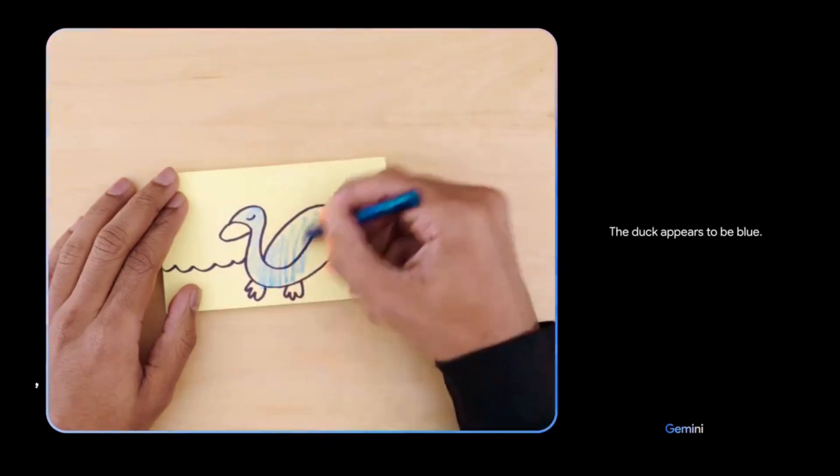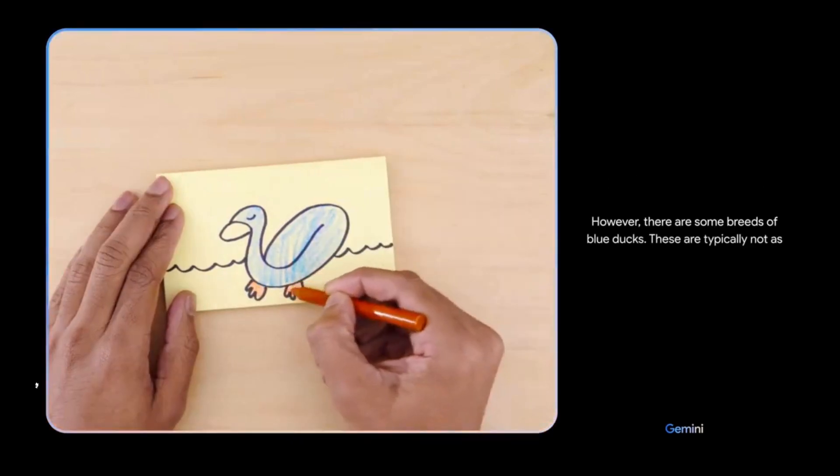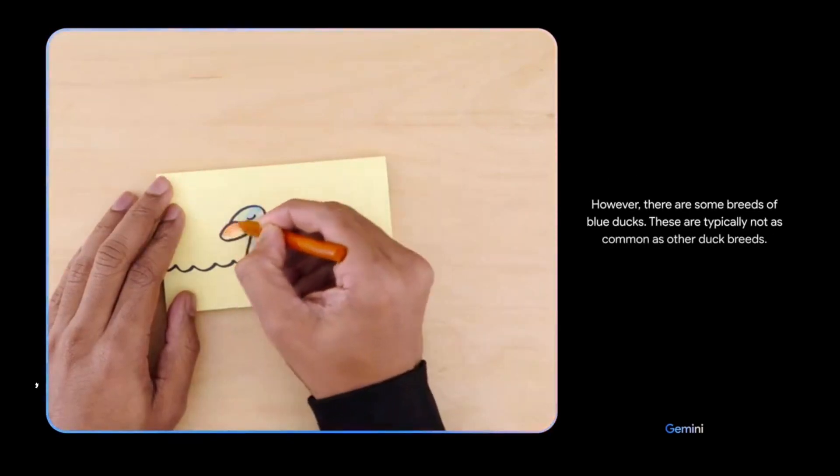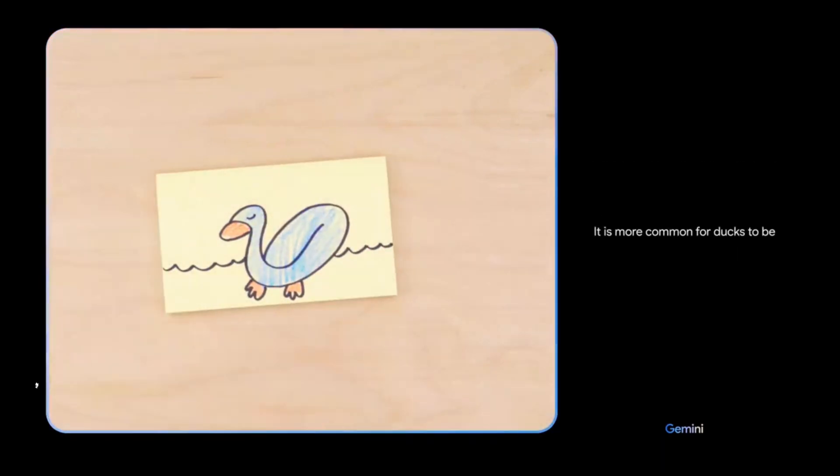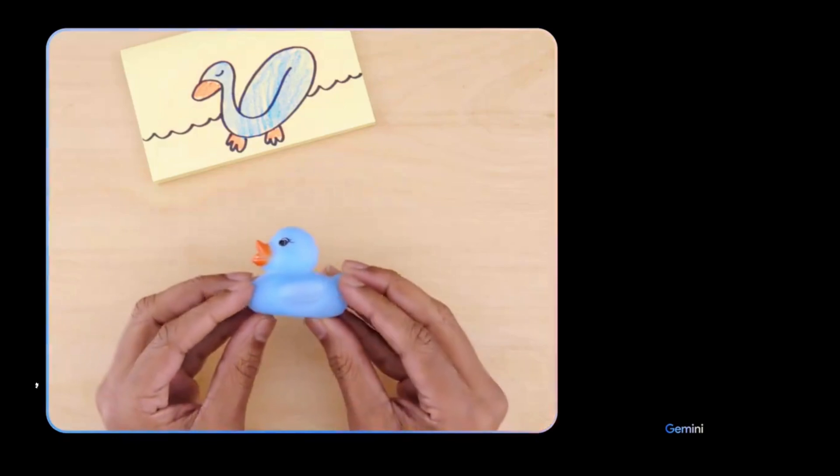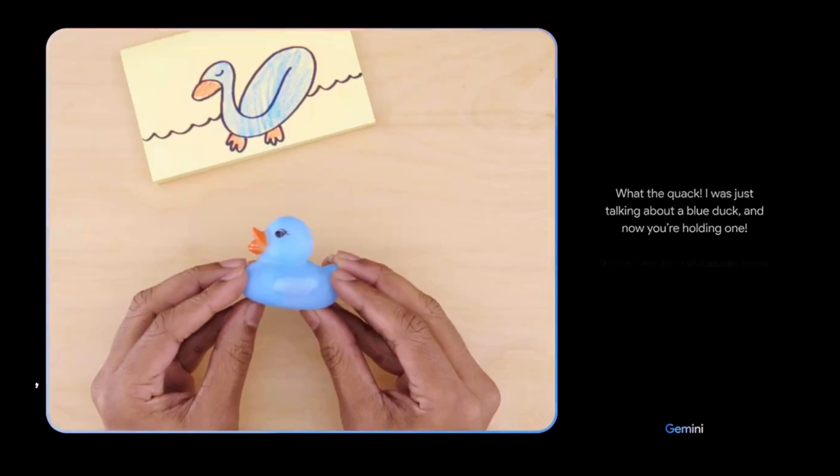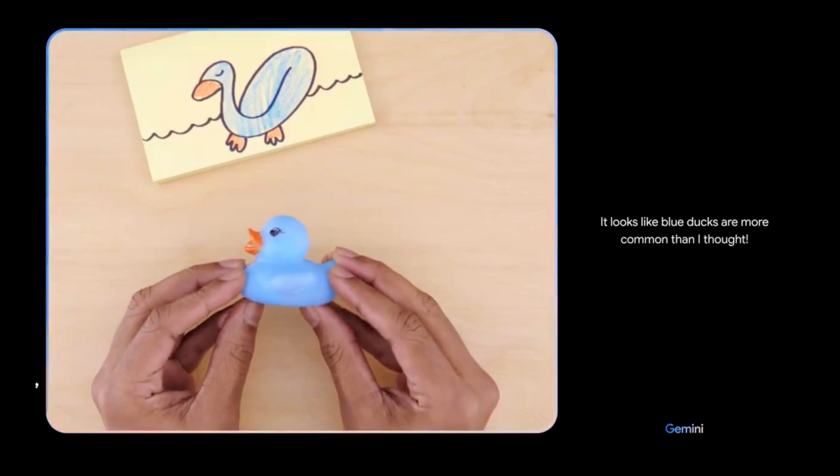The duck appears to be blue. This is not a common color for ducks. However, there are some breeds of blue ducks. These are typically not as common as other duck breeds. It is more common for ducks to be brown, black, or white. Are you sure? What the quack? I was just talking about a blue duck and now you're holding one. It looks like blue ducks are more common than I thought.